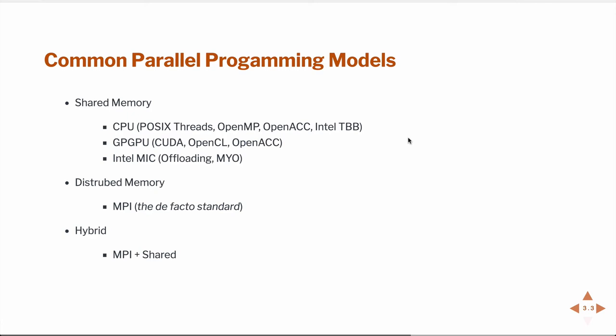These are common programming models — application programming interfaces or particular libraries. For shared memory computing, you have POSIX threads, which are a POSIX Unix standard, OpenMP, OpenACC — which is very new and will probably one day encompass OpenMP as well — and if you're working on an Intel machine, Thread Building Blocks. These are APIs — a standard set of functions or compiler instructions that you use to, for example, unroll for loops or do other types of parallel operations.